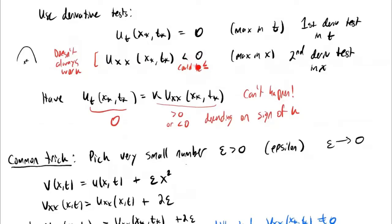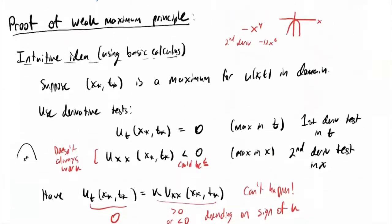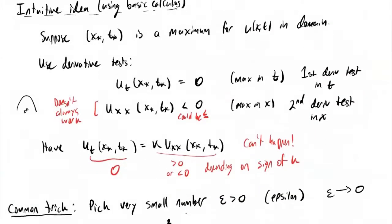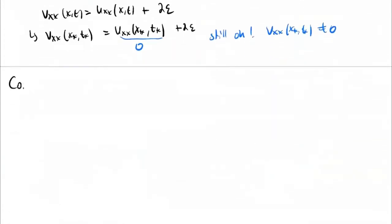If V were a solution to the diffusion equation, then the argument would work. The problem is that if we change our function this way, V will no longer solve the diffusion equation, so we have to correct that issue. What we're going to do now is define this function V as we just did and use this function V to complete the argument. This is a preliminary discussion — let's now dive into the full argument.